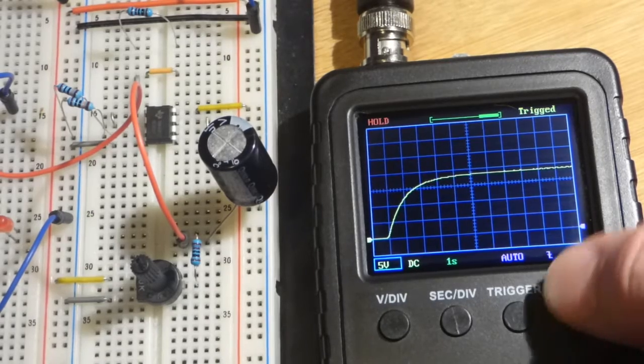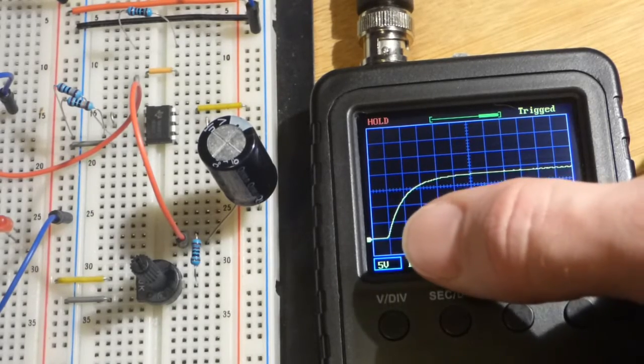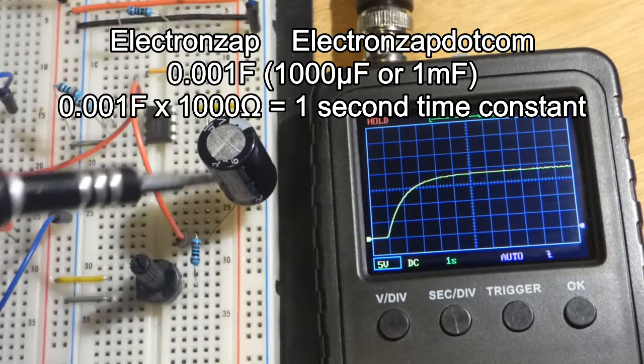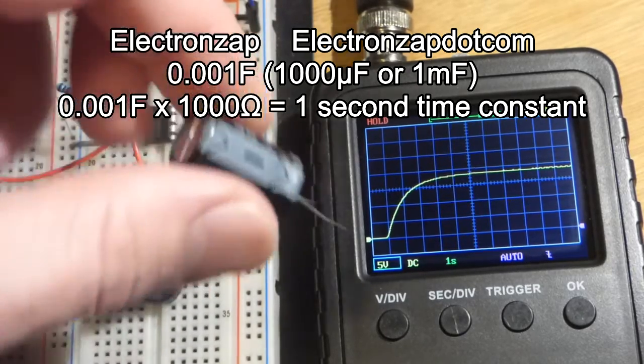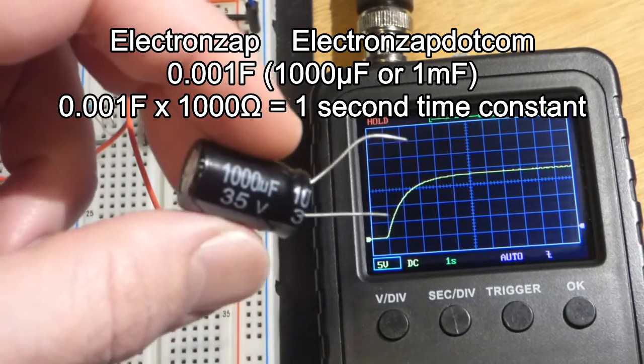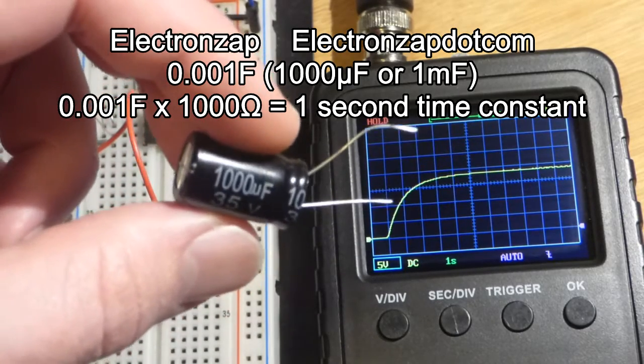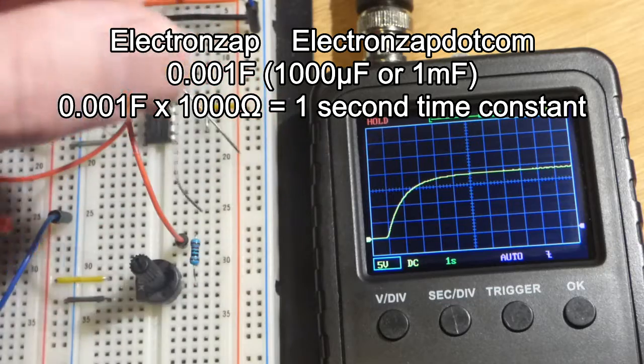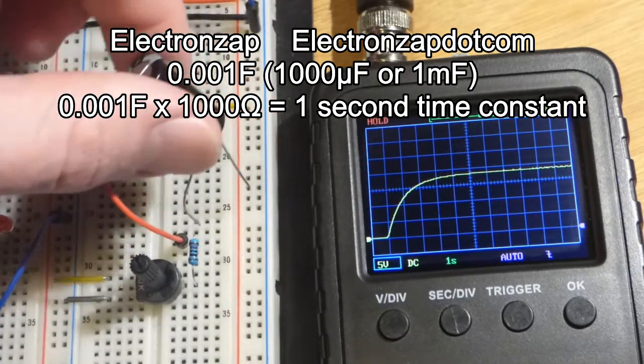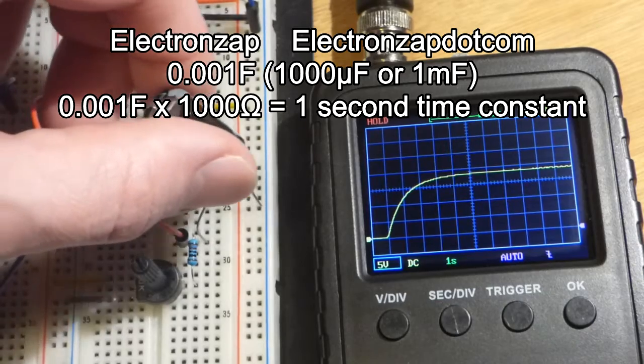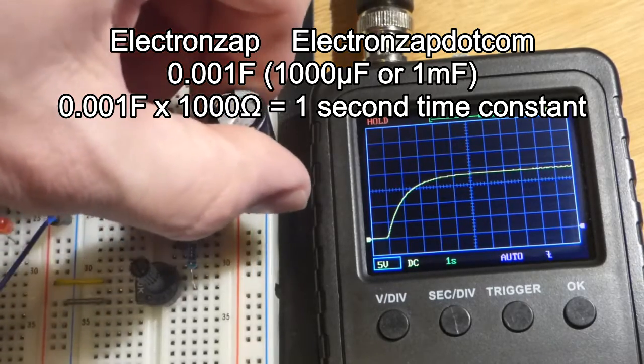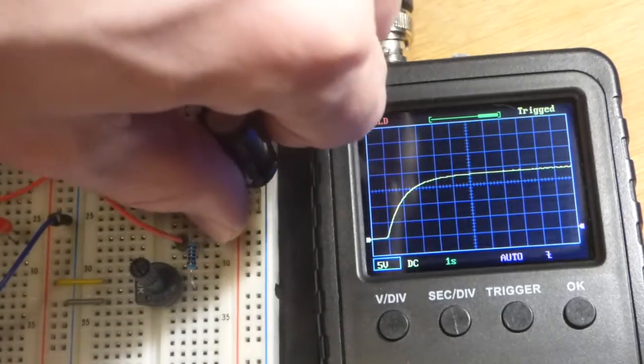Since we're using a 1000 ohm resistor and this is a 1000 microfarad capacitor (one millifarad, one thousandth of a farad) and 1000 ohms of resistance, you multiply those two numbers together to get the time constant of one second.